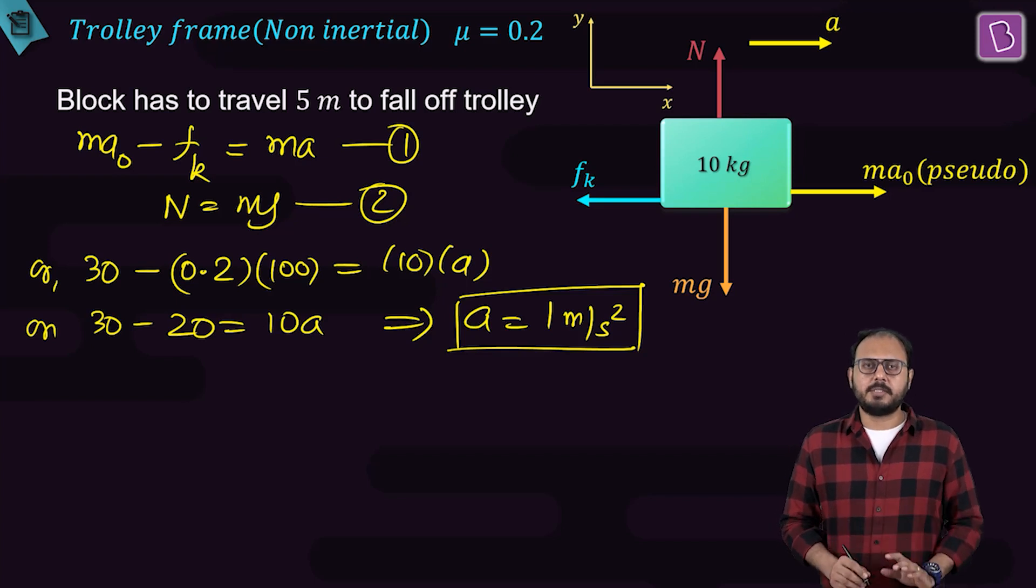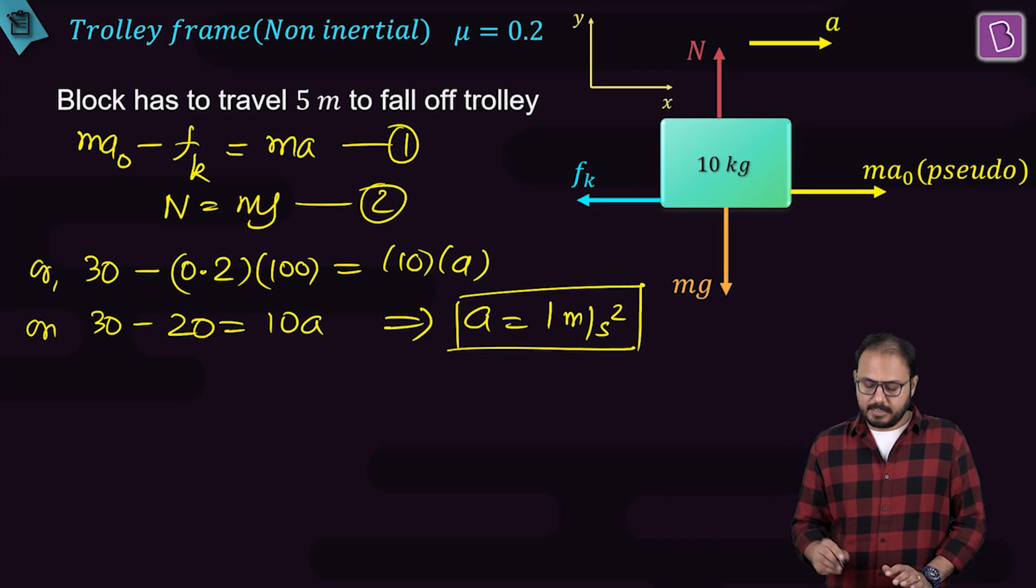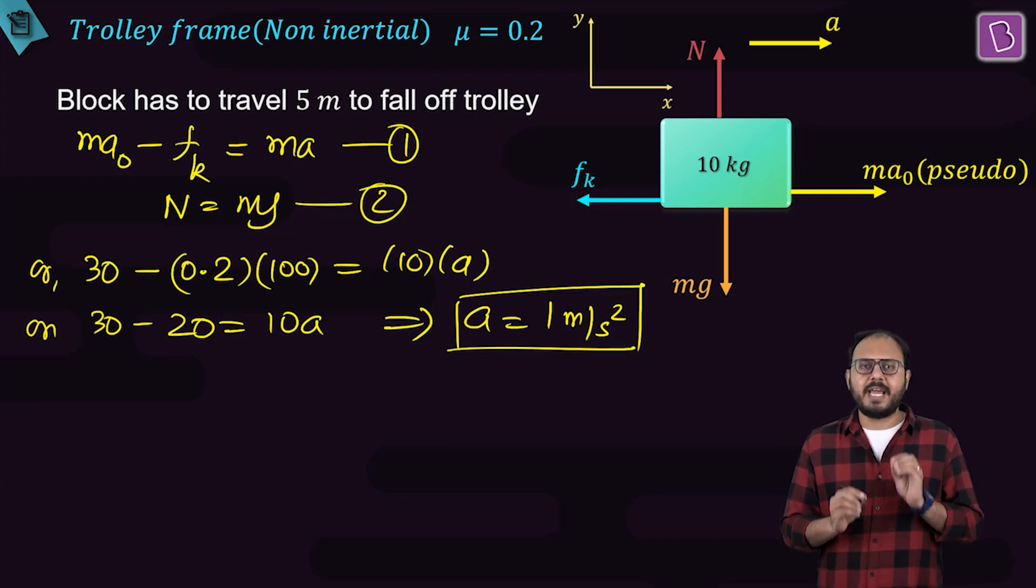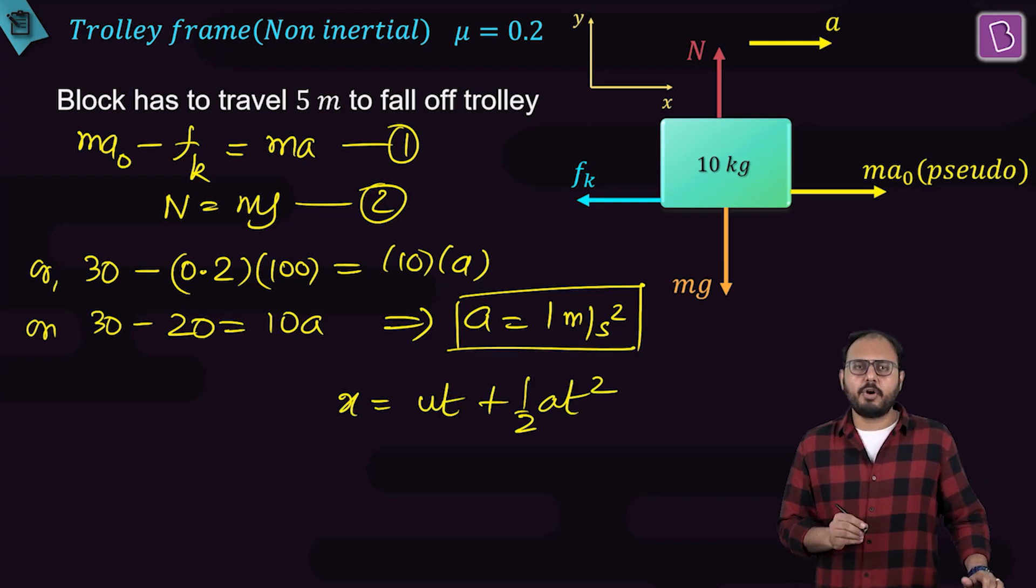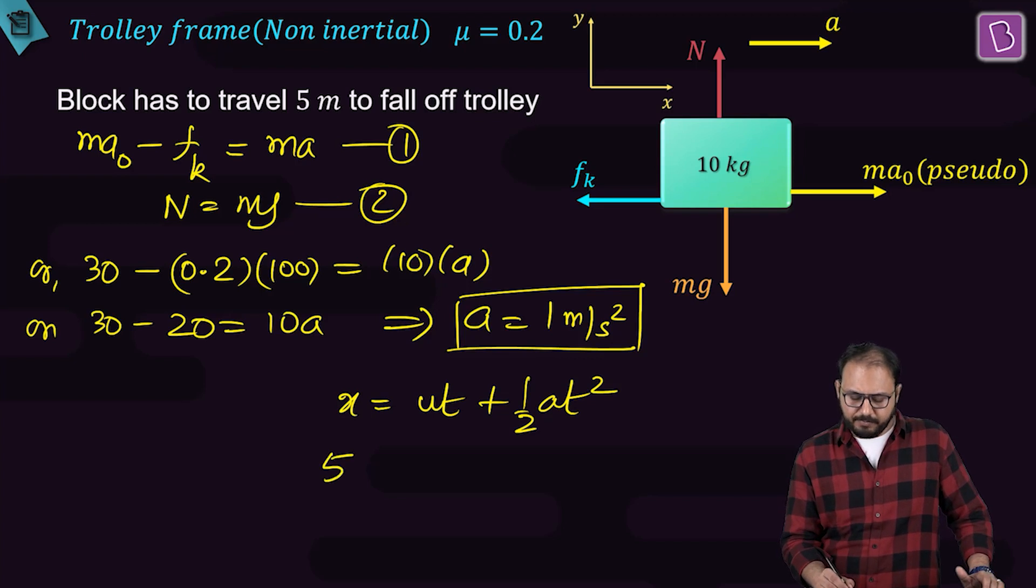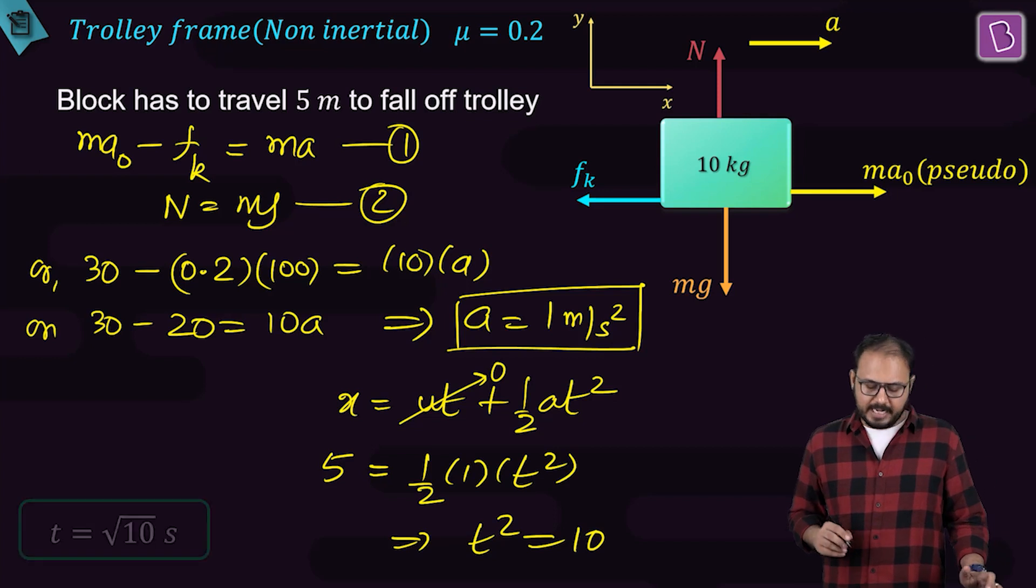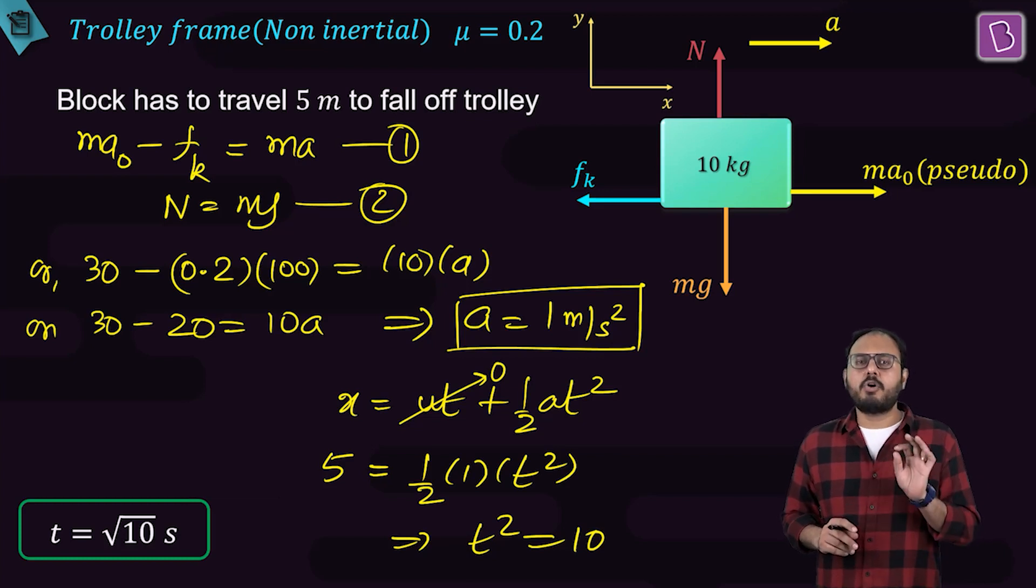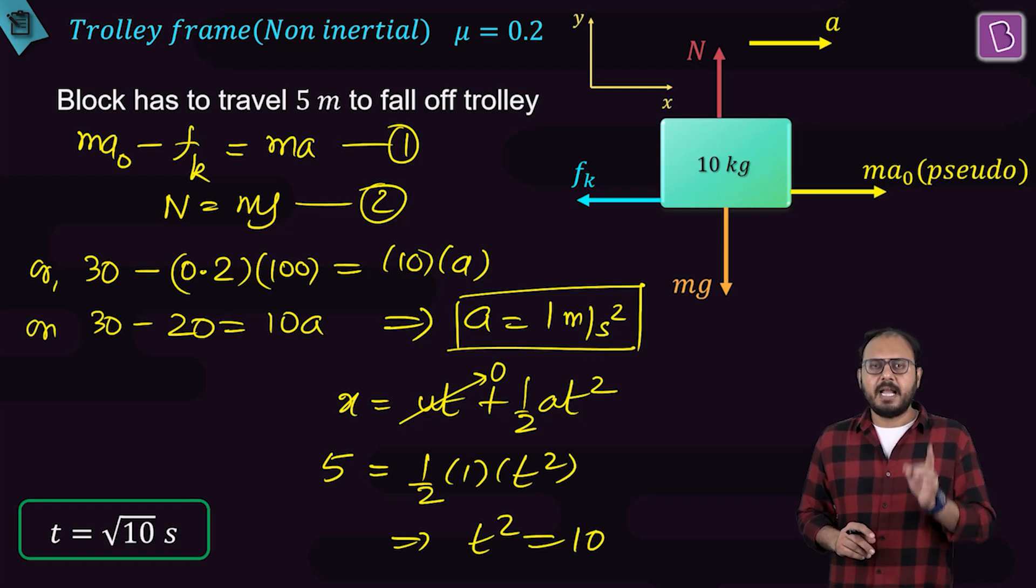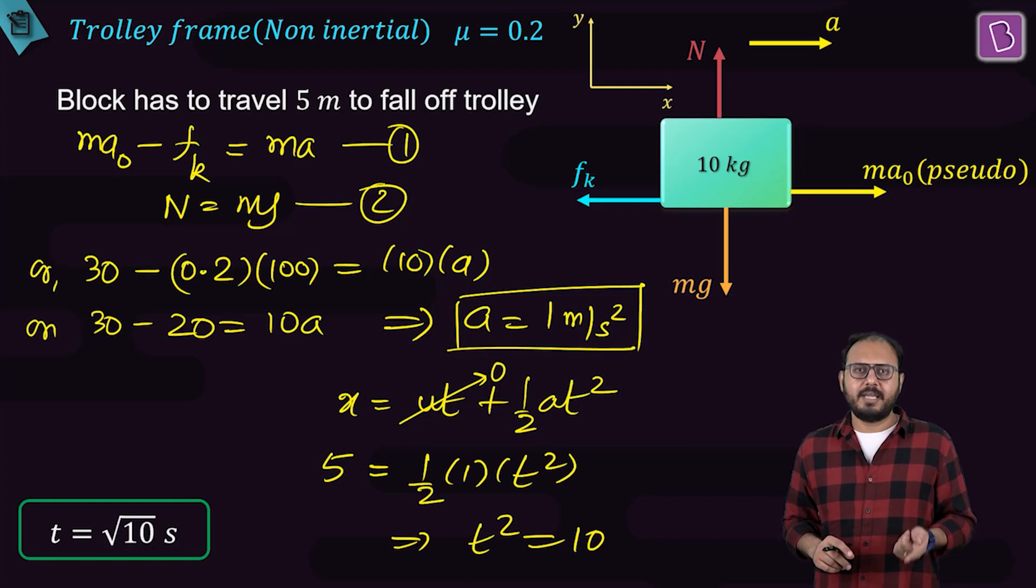Is this acceleration constant? Oh yes, absolutely it's constant. If it's constant, am I eligible to apply the equation of motion x equal to ut plus half at square? Yes. In the trolley frame, the displacement is 5. Initial speed is 0 because everything was at rest to begin with. Half, acceleration is 1 and t square. That implies t square is equal to 10 and t is equal to root 10 seconds. The block slips for 5 meters and loses contact with the trolley in root 10 seconds.